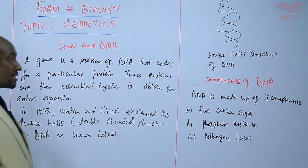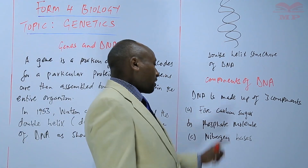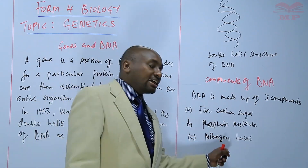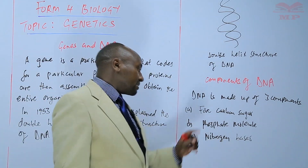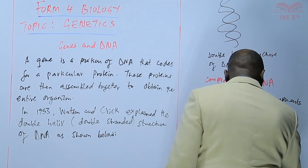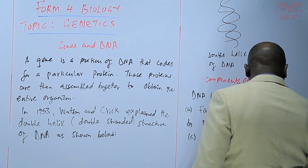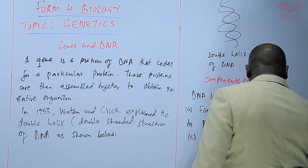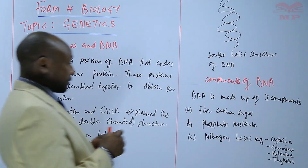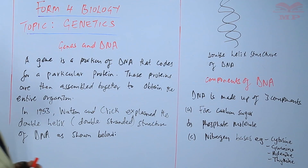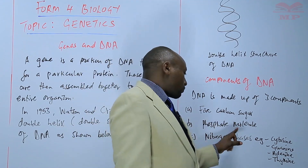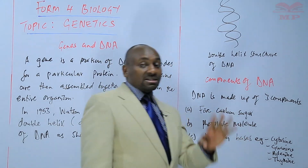So those are the three components of DNA: a five-carbon sugar, a phosphate molecule, and nitrogen bases. There are different nitrogen bases — for example, we have cytosine, guanine, adenine, and thymine. Of the three components, the nitrogen bases are four in number.